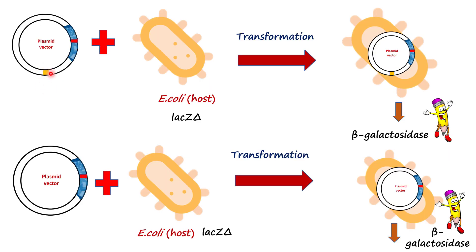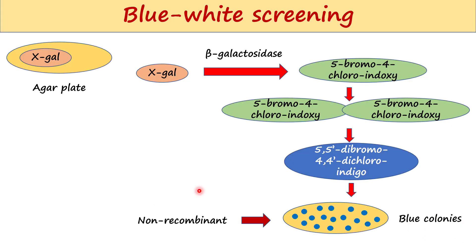If the foreign DNA is inserted at a location other than the MCS, or if it is not inserted at all, the lac Z gene in the plasmid vector complements the lac Z mutation in the host E. coli, thus producing a functional beta-galactosidase.